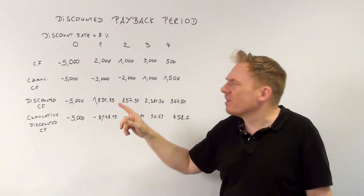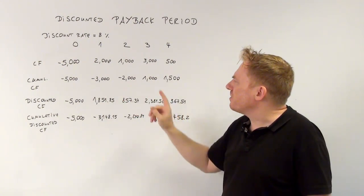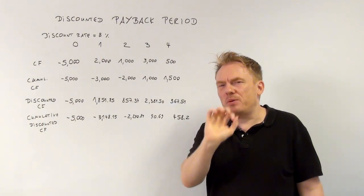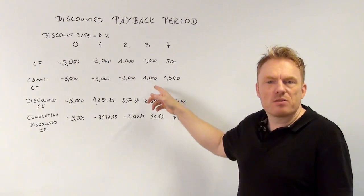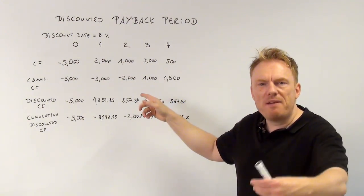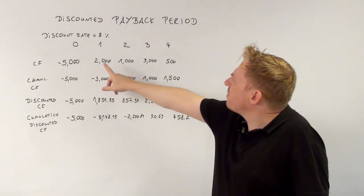Waiting two periods gives us minus $2,000, and waiting three periods means that you have plus $1,000 because you pay $5,000 and you get $2,000,